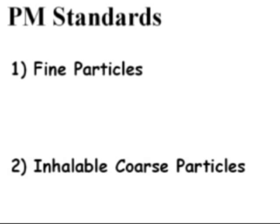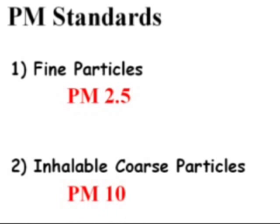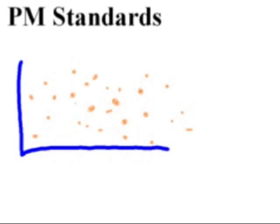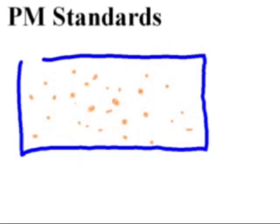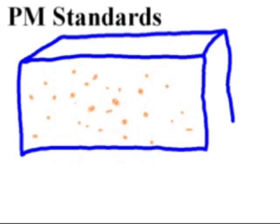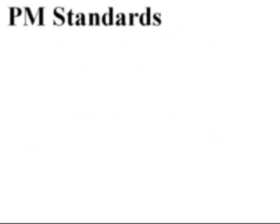The revised 2006 standards address two specific categories of particle pollution: fine particles and inhalable coarse particles. Fine particles are called PM2.5 because their size is 2.5 micrometers in diameter and smaller. Inhalable coarse particles are called PM10 because their size ranges from 10 micrometers down to larger than 2.5 micrometers. The 2006 standards define how much PM2.5 and how much PM10 are allowable within any area in any given 24-hour period of time. The standards also state how much of these are allowable within an annual period of time. In our next lesson, we'll discuss specifically the allowable amounts of PM that the EPA regulates.